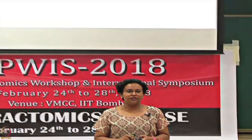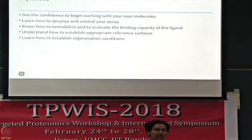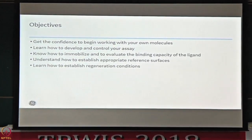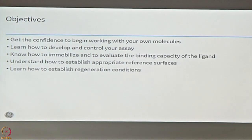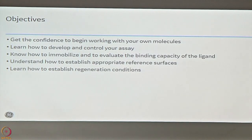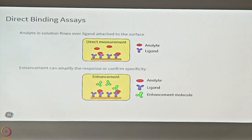Coming to the objectives of the lecture: we will talk about the assay development part - what you would do when you first set up a Biacore assay, what optimizations you would like to do, how an assay should look, which one can be a ligand, what can be an analyte, what are the different reference surfaces, and also very important - how to optimize regeneration conditions, because if your regeneration is not perfect your runs typically do not go well.